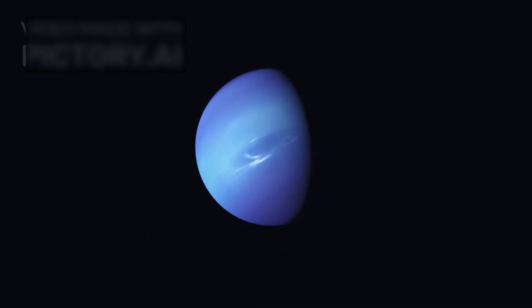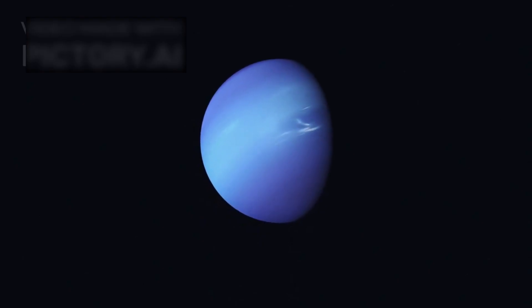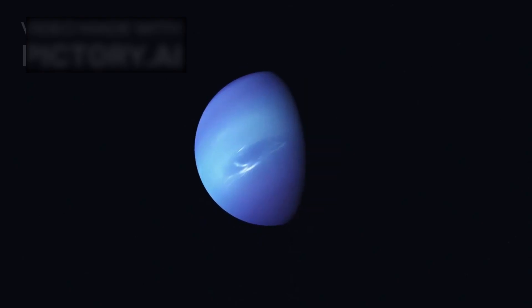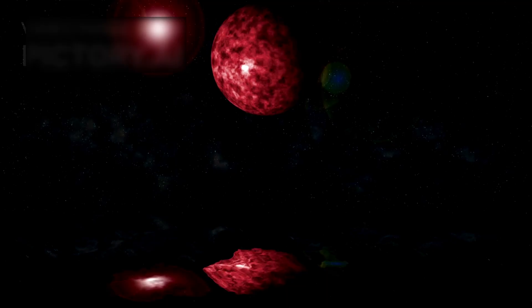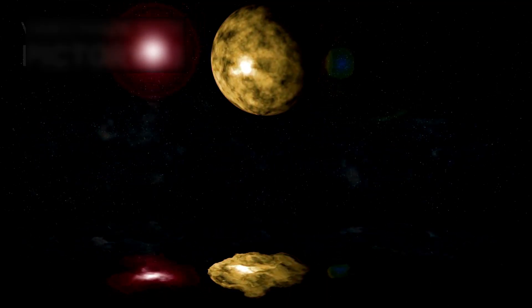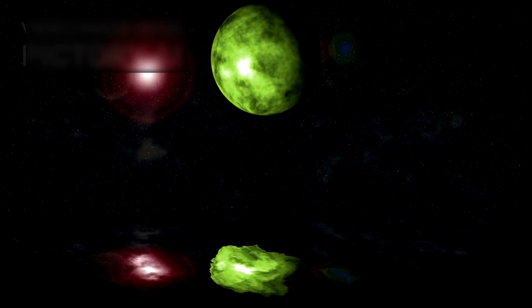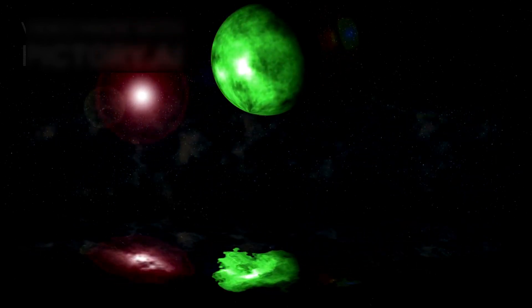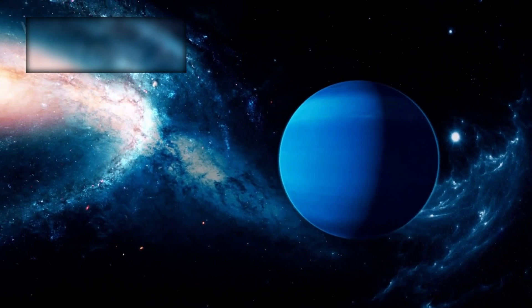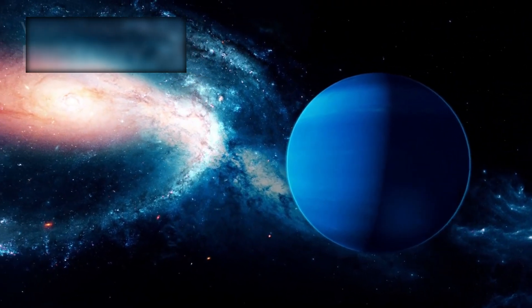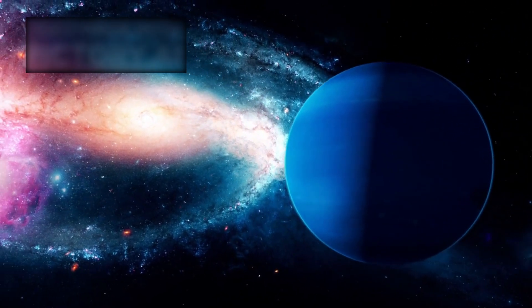These so-called sub-Neptunes are among the most common types of planets in our galaxy, yet their composition and nature remain mysterious, precisely because we lack a direct counterpart nearby. Is K218b a scaled-up version of Earth, with oceans and perhaps even continents beneath its skies? Or is it more like a mini-Neptune, with a dense, high-pressure icy interior capped by a thick hydrogen atmosphere?